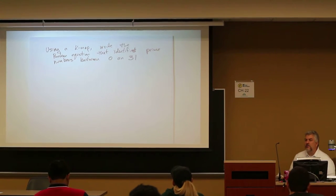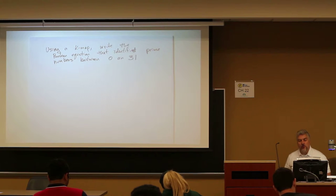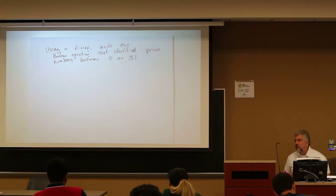Alright, right now we're going to do a simple example of a K-map and then the equation that will come through it with respect to this simple word problem. Using a K-map, write the Boolean equation that identifies prime numbers between 0 and 31.